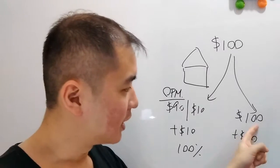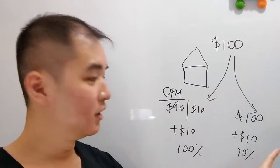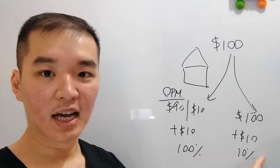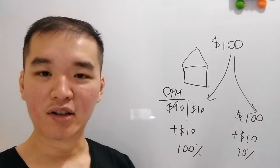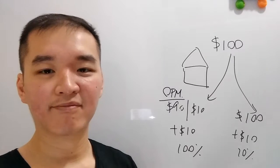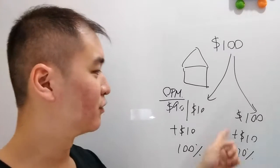So that means you put a hundred dollars in and then the price of the house goes up by $10 and you make 10%. Very straightforward. The housing market goes up by around 10% a year in Vancouver anyways.